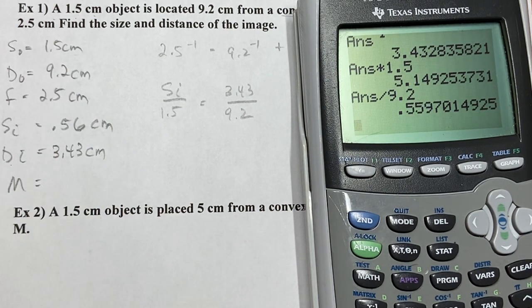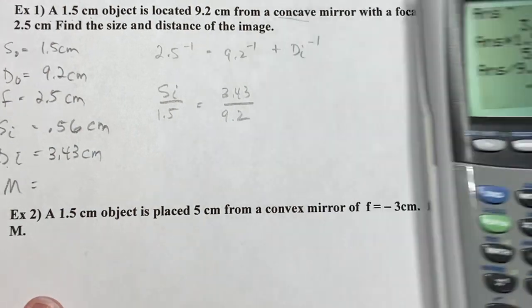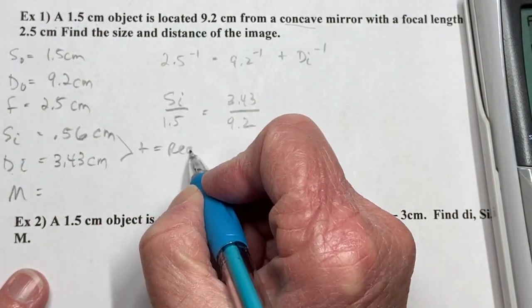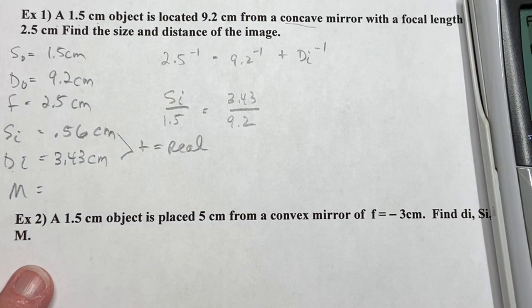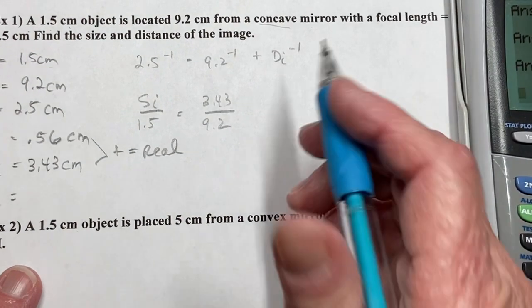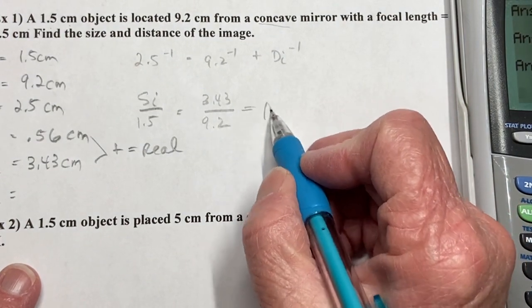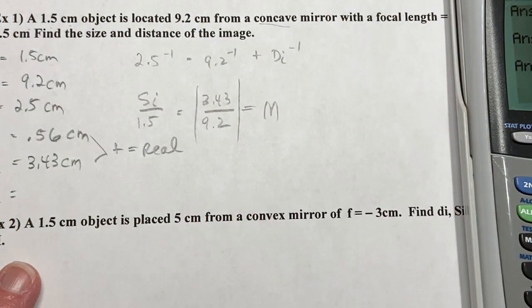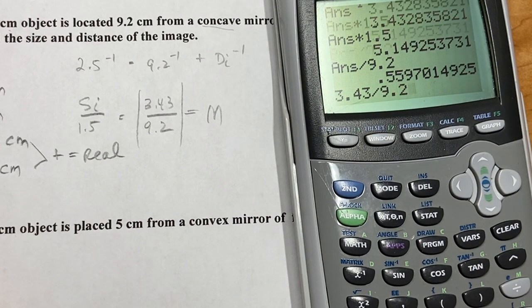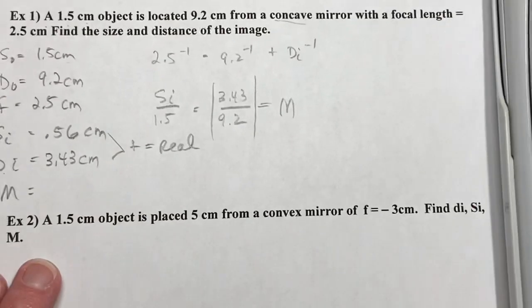All of these are positive. The fact that the di and si are being positive equals real images. You can tell, and now let's do a magnification. So the magnification is literally this formula, and I'll just take one of them. So I'm going to take 3.43 divided by 9.2, and I get 0.37.